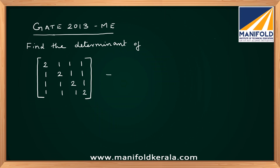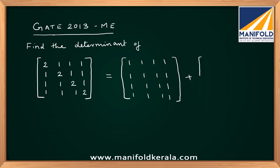You can think of this particular matrix as a sum of two different matrices: one matrix with all elements equal to 1, and the other being a 4 by 4 identity matrix — 1 0 0 0, 0 1 0 0, 0 0 1 0, and 0 0 0 1.